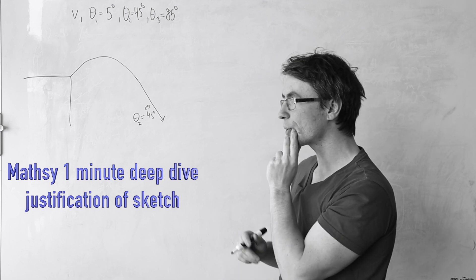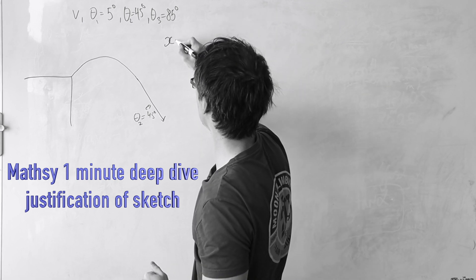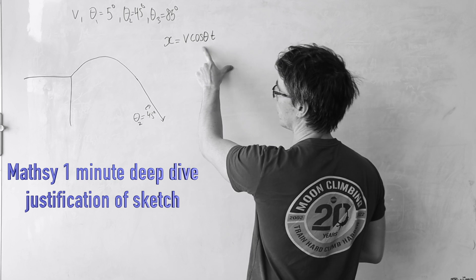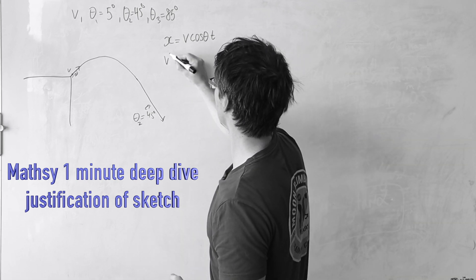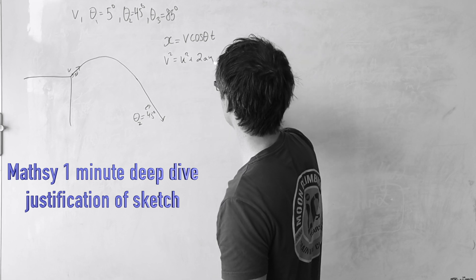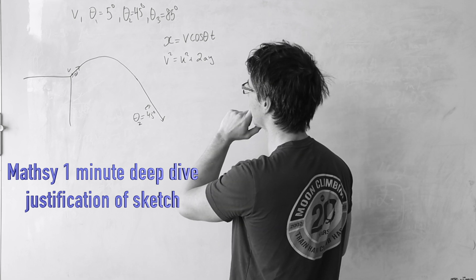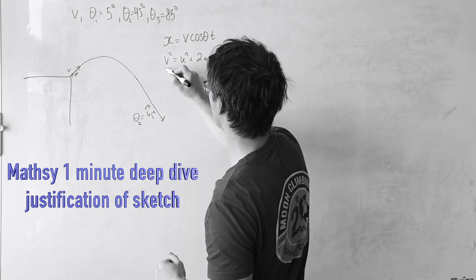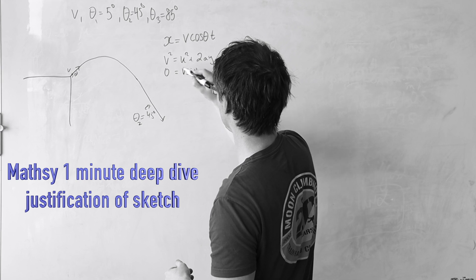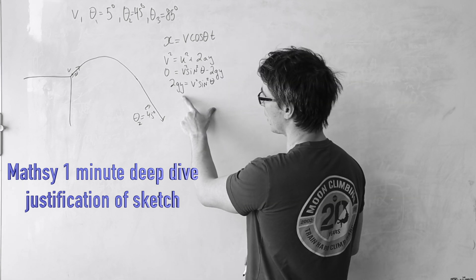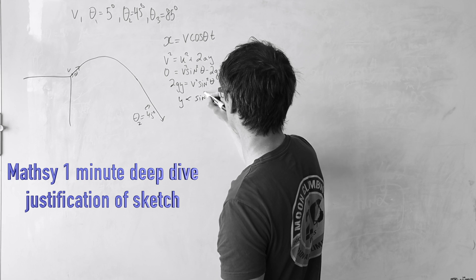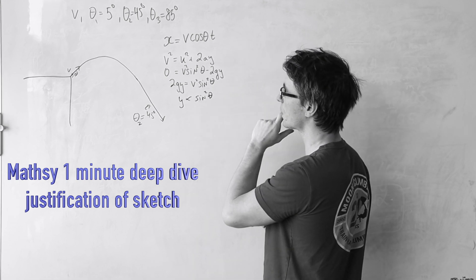The horizontal range is found by v·cosθ multiplied by time. The maximum height is determined by v² = u² + 2ay. At maximum height the final speed is zero, so u = v·sinθ squared, meaning the vertical height is proportional to sin²θ.